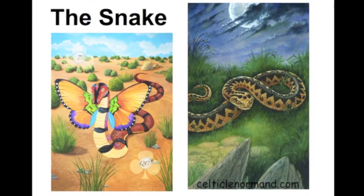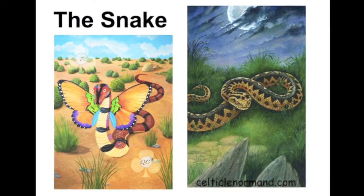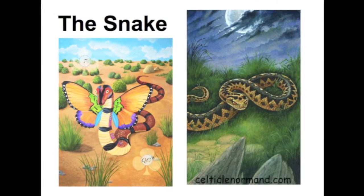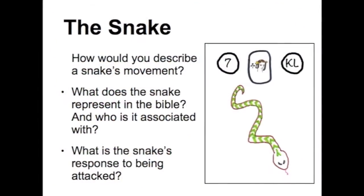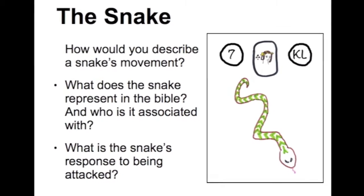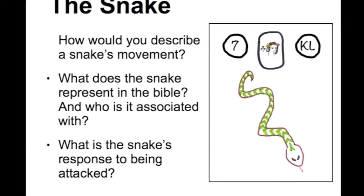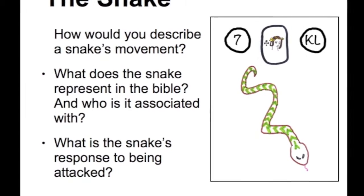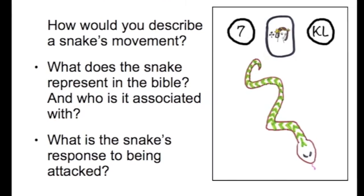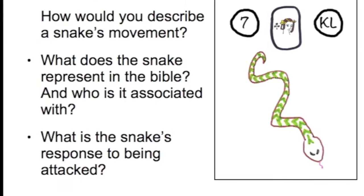Hi, I'm Chloe from Inner Whispers, and in this third video in the Learn Lenormand series, we're going to look at the cards from the snake to the birds. Here are some images for the snake card from the Wings of Change Lenormand and the Celtic Lenormand. And here are the questions for the snake: how would you describe a snake's movement? What does the snake represent in the Bible, and who is it associated with? What is the snake's response to being attacked? Remember, you can pause at any time to think about these questions for yourself.